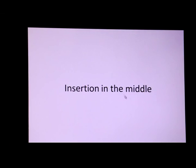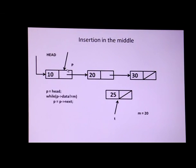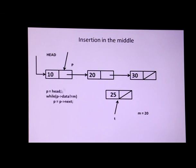Next, we will see how to insert a node in the middle of the list. This is my list which contains three elements: 10, 20, and 30. Now I am going to place 25 in between 20 and 30. So I have to store the value 20 in a temporary variable called M. I am going to define a temporary variable P and set P to head, then go through the list using a while loop to find the value 20, checking every time whether the data part is equal to M.